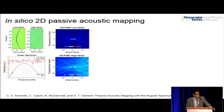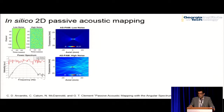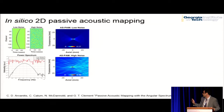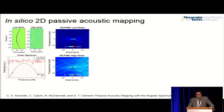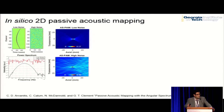The first question we asked was whether in the two-dimensional limit we can use this technique for passive acoustic mapping, using simulations first. At the top of the image, you can see that we are able to localize point sources using a simulated dataset. At the bottom, we can see that we can do that even when the noise is an order of magnitude higher than the signal.